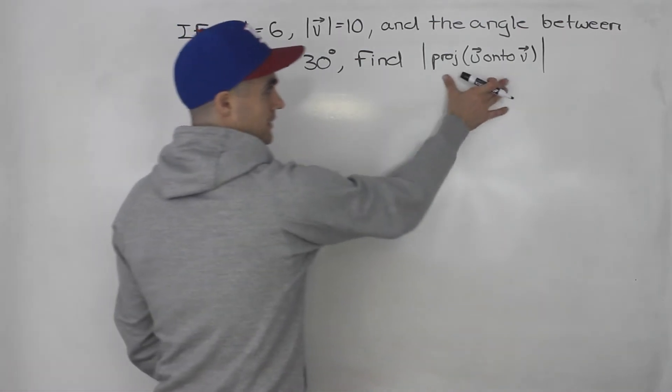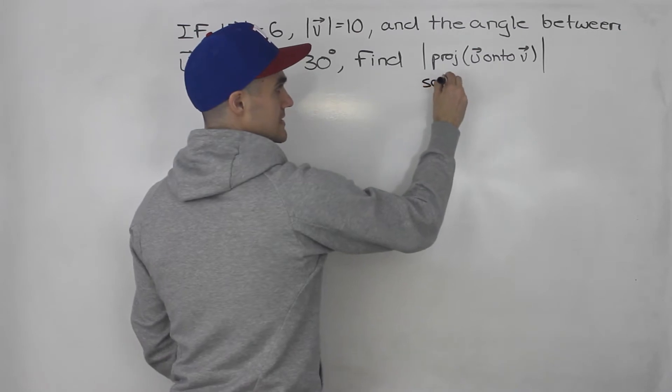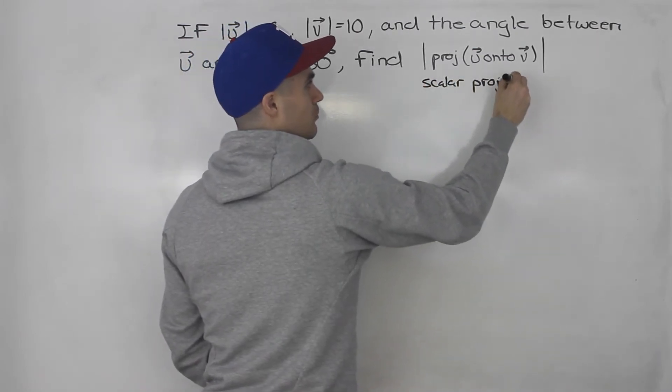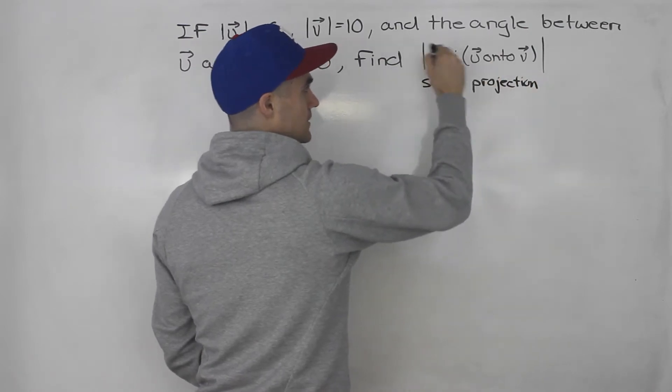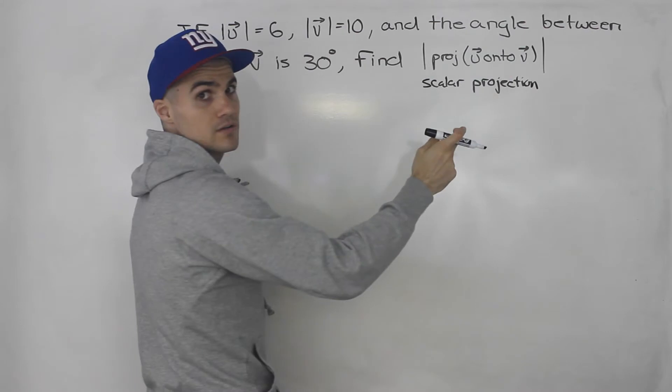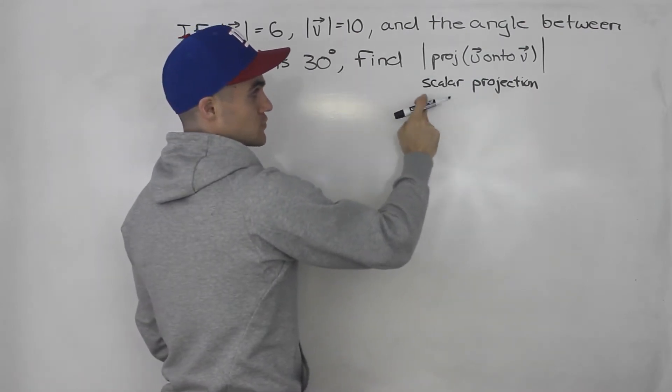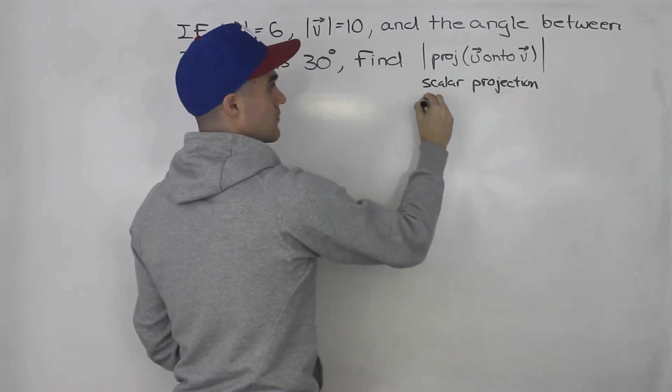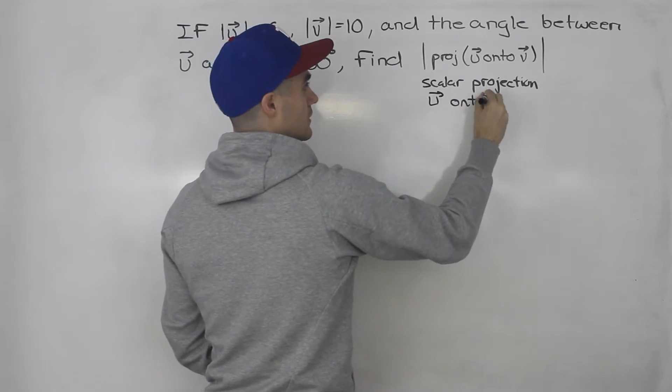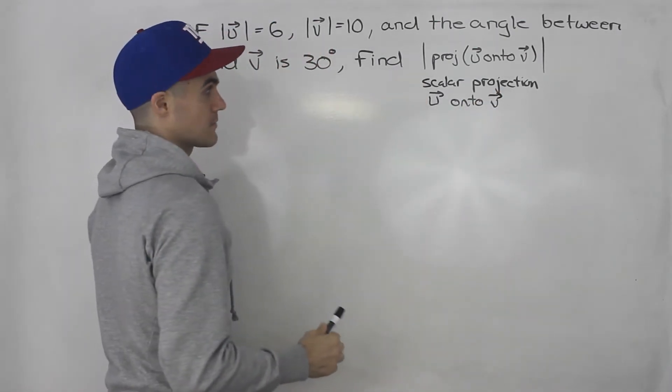Now this is the magnitude of the projection. Another way to say this is the scalar projection. Both mean the same thing. Basically the magnitude of the projection of u onto v is the scalar projection of u onto v. So just be aware that if this question was worded in this way, it would be the same thing. Scalar projection of u onto v. They can ask either or, both mean the same thing.